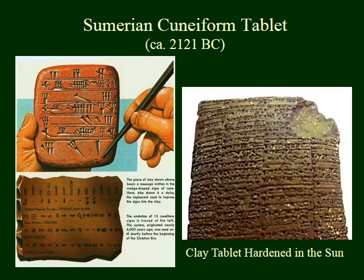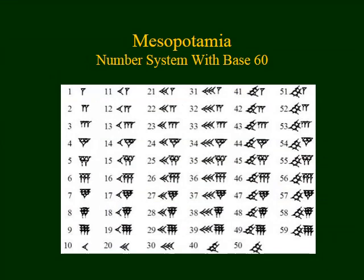Generally speaking, they would write these things on clay tablets. It would be soft, then they would write in the clay, set it out in the sun, and it would become hard. This allowed them to maintain lots of different records. They would use a stylus — like the one where the arrow is pointing here — make their impressions in the clay, and then it could be permanently recorded and maintained.